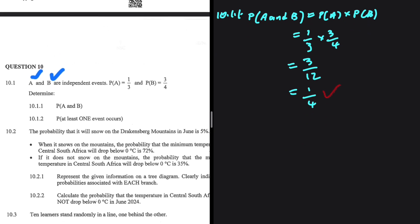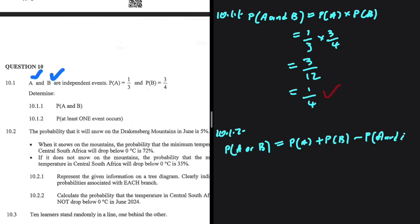Let's take a look at 10.1.2. There's a bit of nuance here. The question is asking: what is the probability of at least one event occurring? At least one event taking place is just a fancy way of saying, what is the probability of A or B?